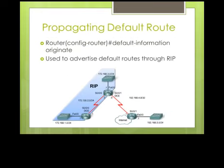You can still propagate your default route with RIPv2, just like version 1, with the 'default-information originate' command. This will take your default route or gateway of last resort and send that in RIPv2's updates.